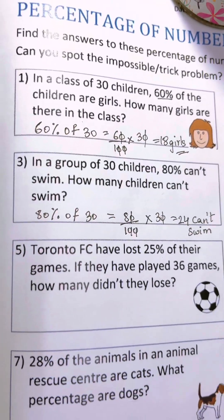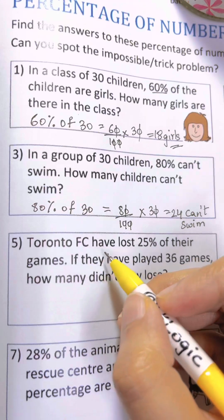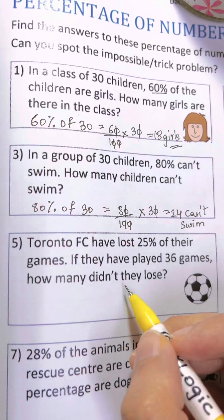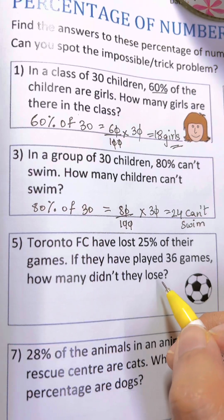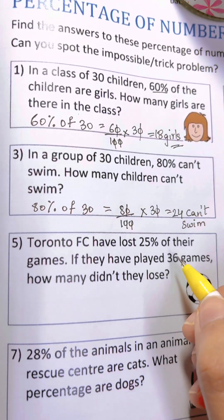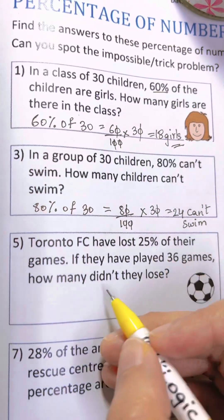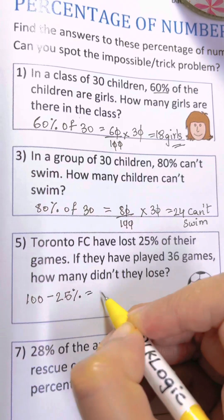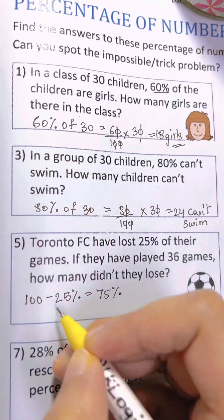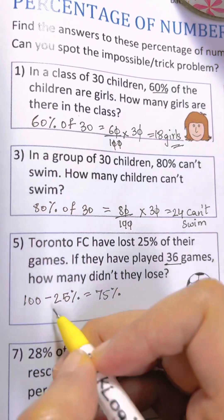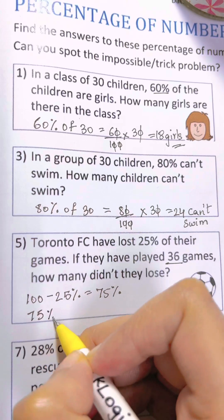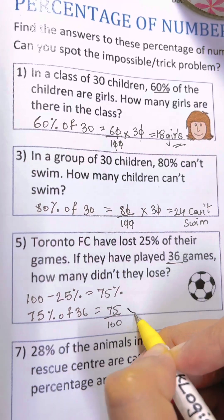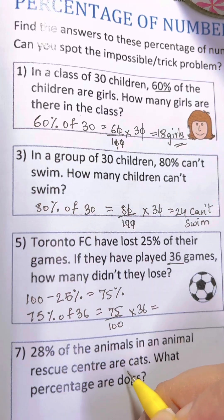Question number five: Toronto Football Club have lost 25% of their games. If they have played 36 games, how many didn't they lose? So we find 100% minus 25% = 75%. We need to find 75% of 36 games. So 75 over 100 times 36.